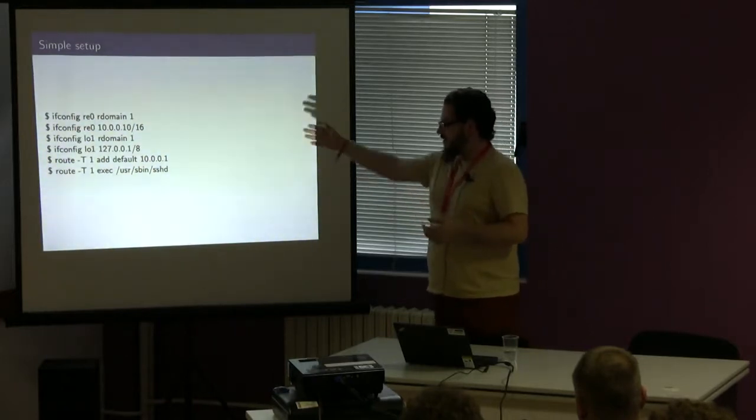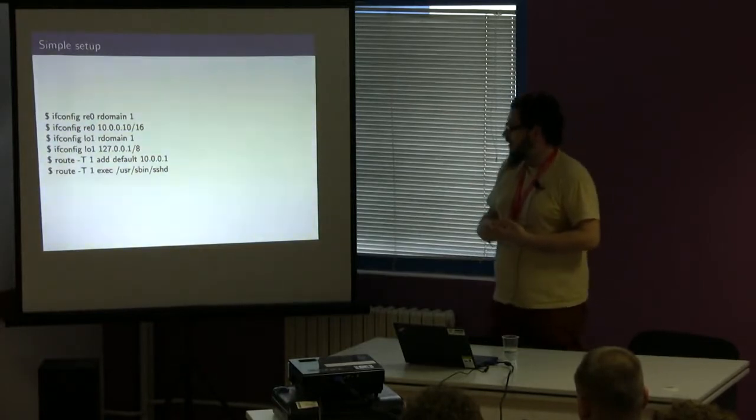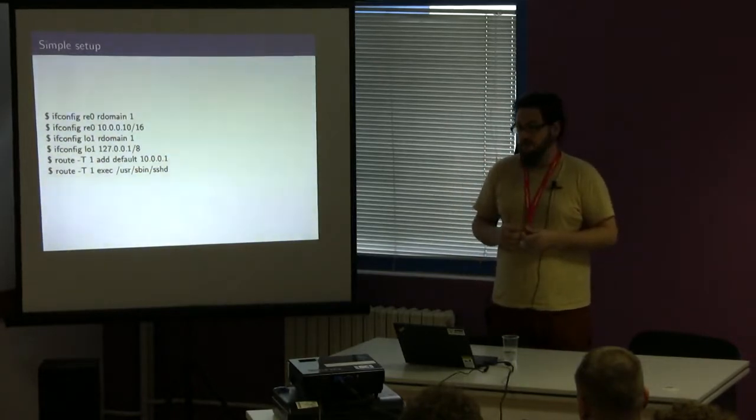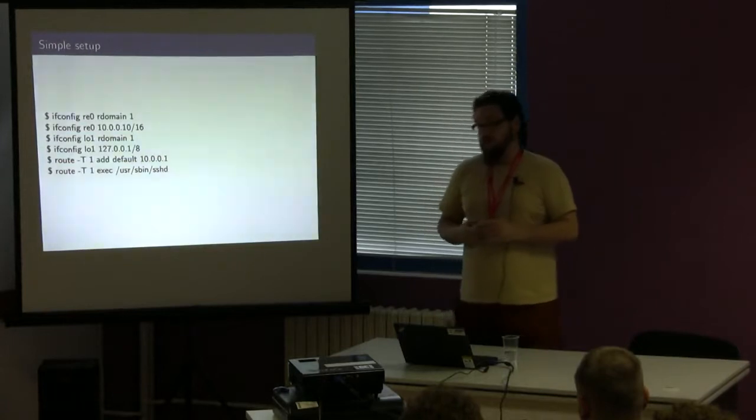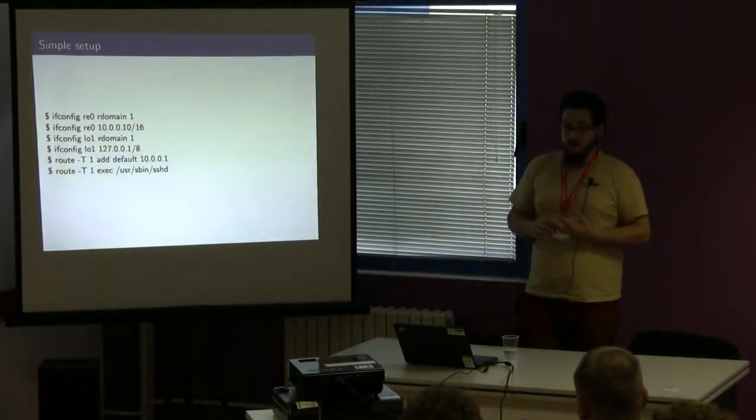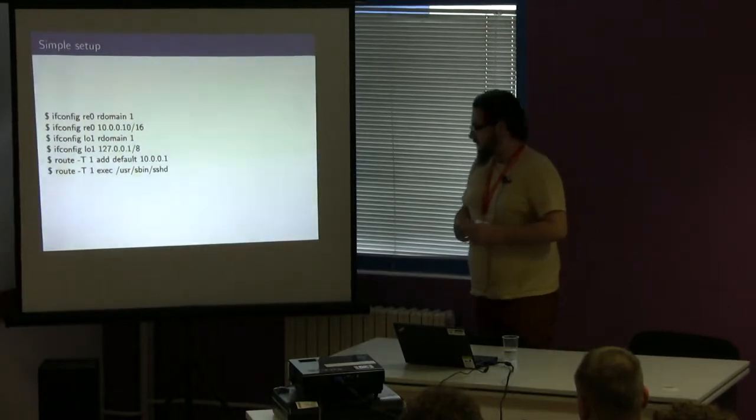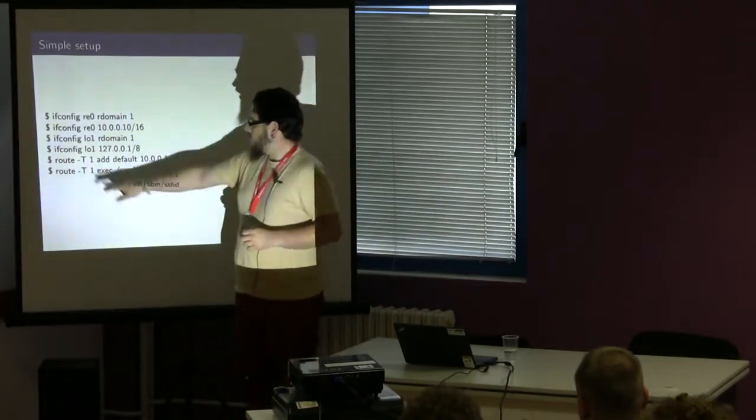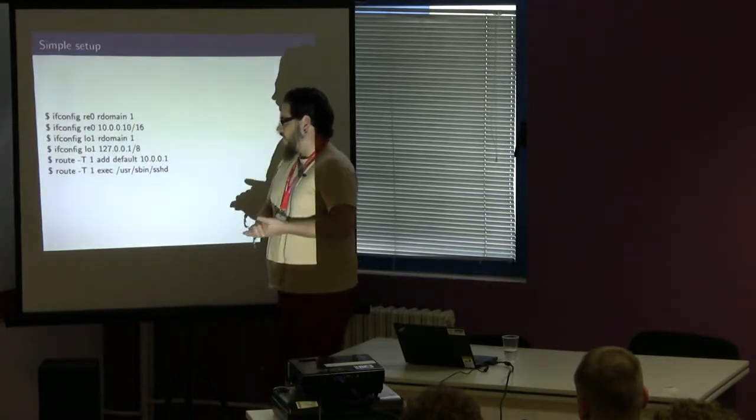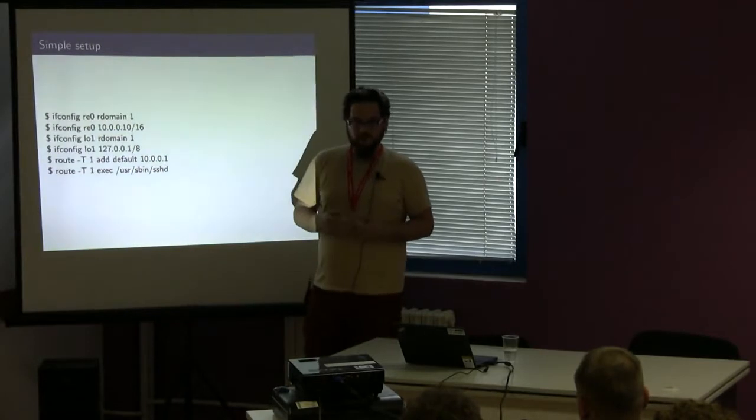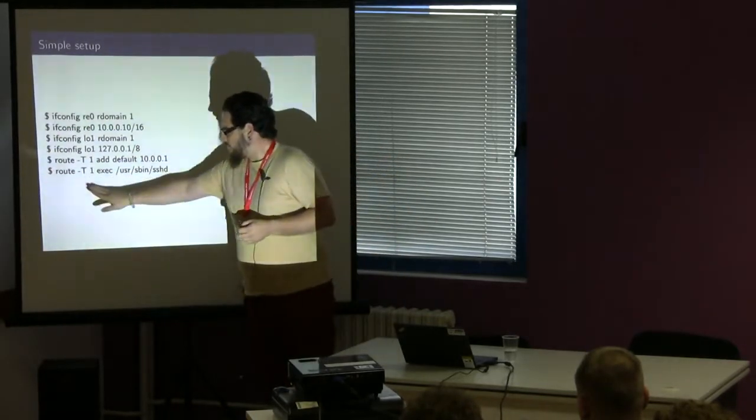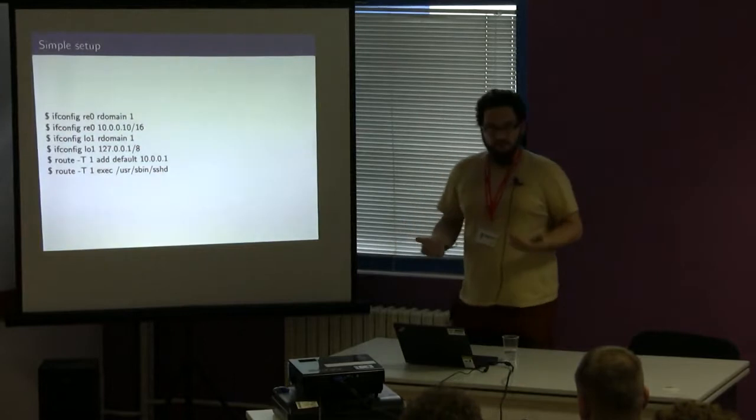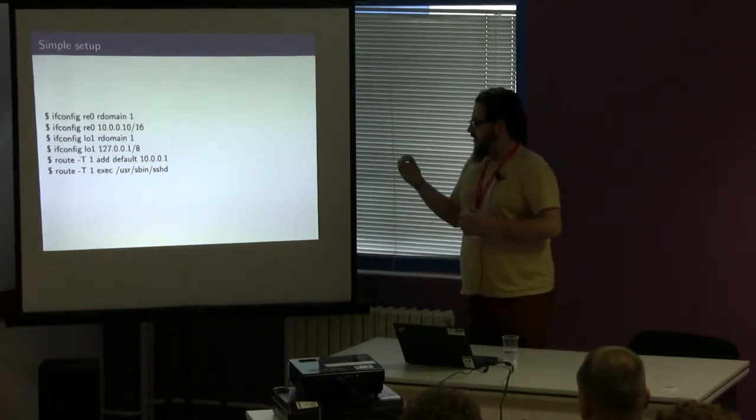Then we create a local host on L01. That's just an arbitrary loopback interface. You can choose whichever number you want. To make things easier for myself, I tend to use the same number as the routing domain, so it makes it much easier to imagine things. Then I add a default route here pointing to 10.0.0.1 and add this to routing domain number one. Because I want to be able to log in with SSH on this, we extended route to have an exec option to execute commands, similar in the style of sudo, except this runs it actually in that routing domain.